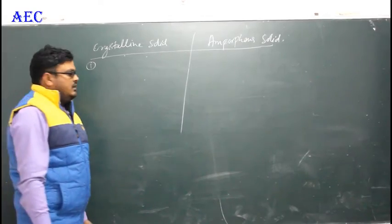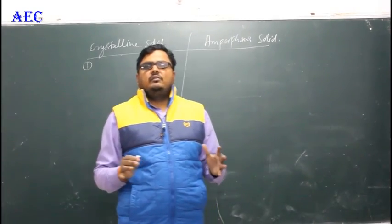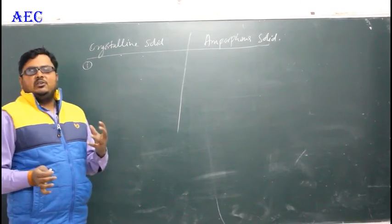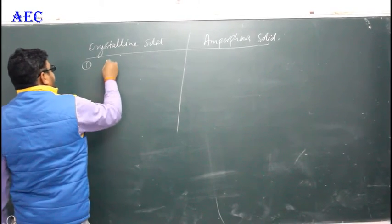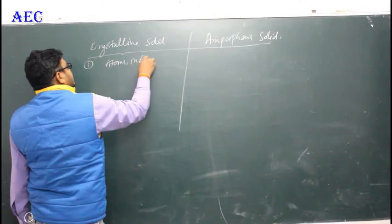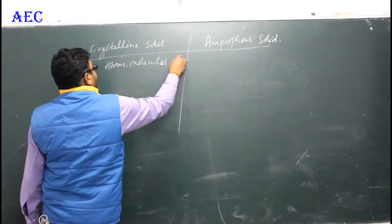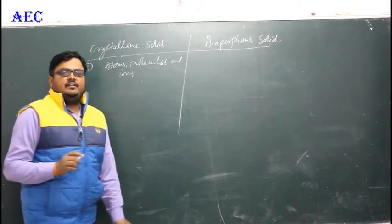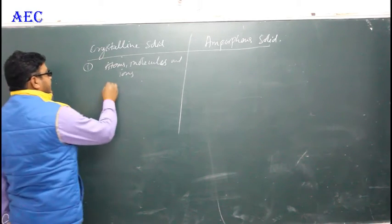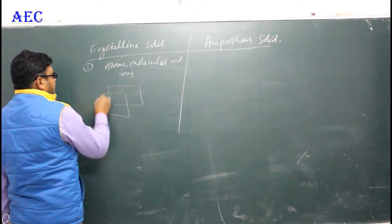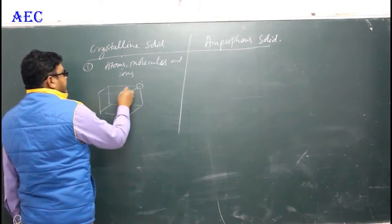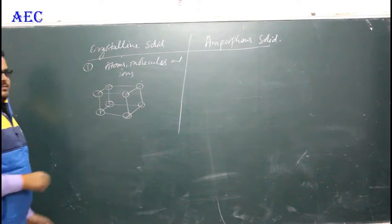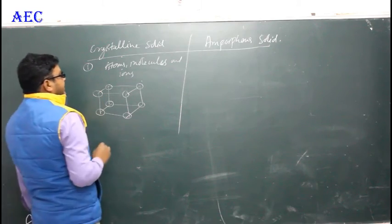Crystalline solid is a solid which has a regular arrangement of constituent particles — meaning atoms, molecules, and ions. Constituent means the parts from which something is made. Regular arrangement means constituent particles are fixed at specific positions, such as corners.